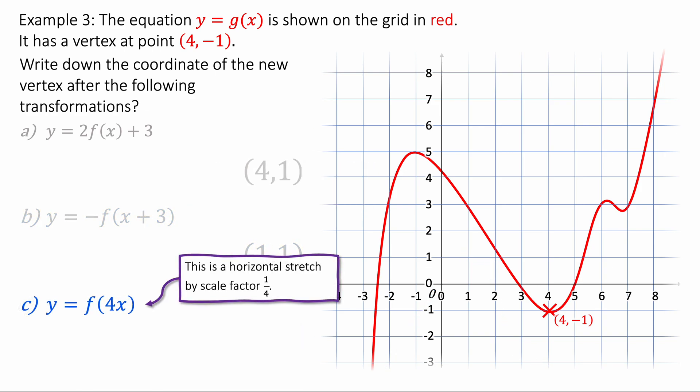Finally we've got y equals f of 4x. And this is going to be a horizontal stretch by scale factor 1 quarter. So it will look like this. 1 minus 1. And we're finished.